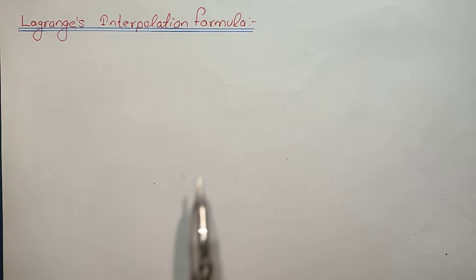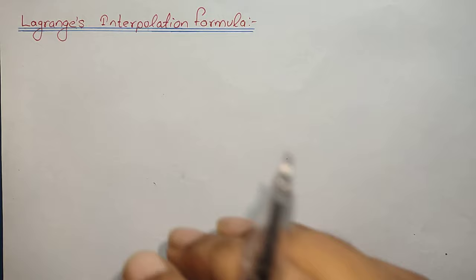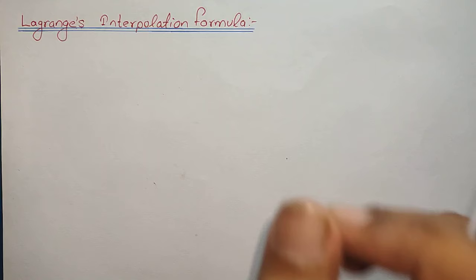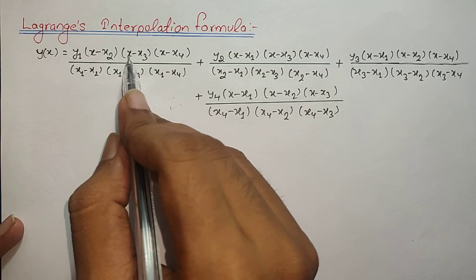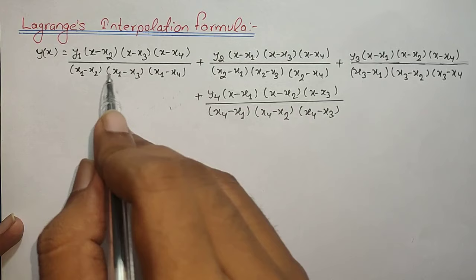I will soon be adding a video on Newton's divided difference formula. For now, let us begin with the Lagrange interpolation formula. The formula is: y(x) equals y1 times (x minus x2)(x minus x3)(x minus x4) divided by (x1 minus x2)(x1 minus x3)(x1 minus x4), plus similar terms for y2, y3, and y4.